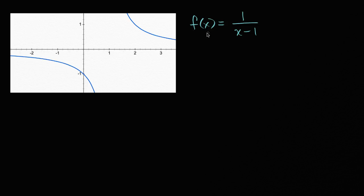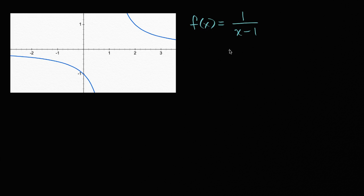There are situations where you have some type of a function — this is clearly a non-linear function. f(x) is equal to one over x minus one. This is its graph, or at least part of its graph right over here. But we want to approximate it with a linear function, especially around a certain value.